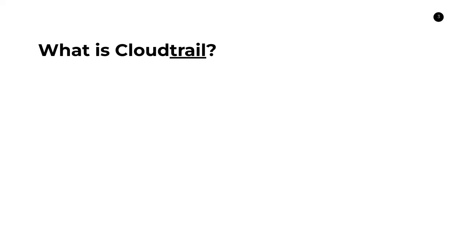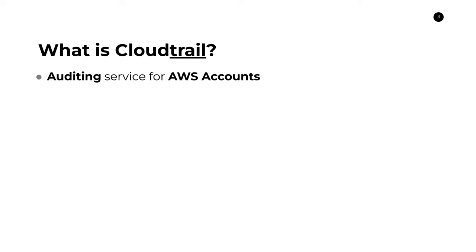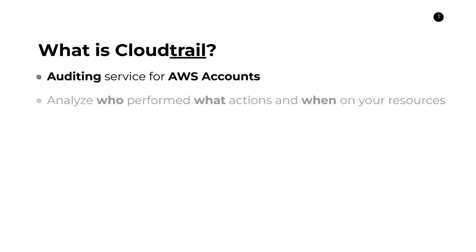Now I want to move on and talk about CloudTrail. So despite having two very similar names, these two things do very different things. We learned that CloudWatch is meant for monitoring applications, but CloudTrail is very different — it is an auditing service for AWS accounts, and it allows you to analyze who performed what actions and when on your AWS resources. The way that CloudTrail makes this available to you is through trails.